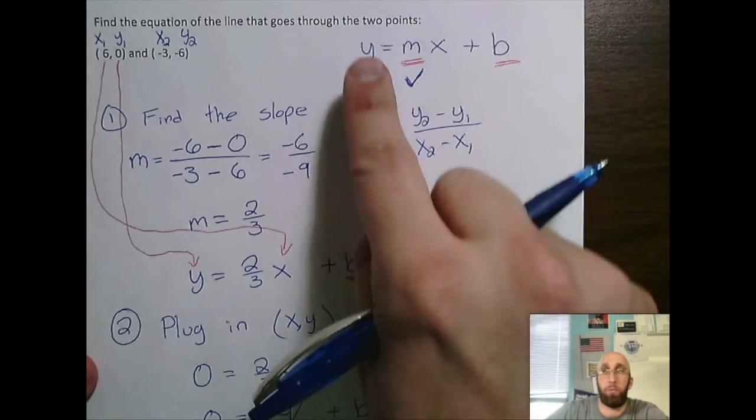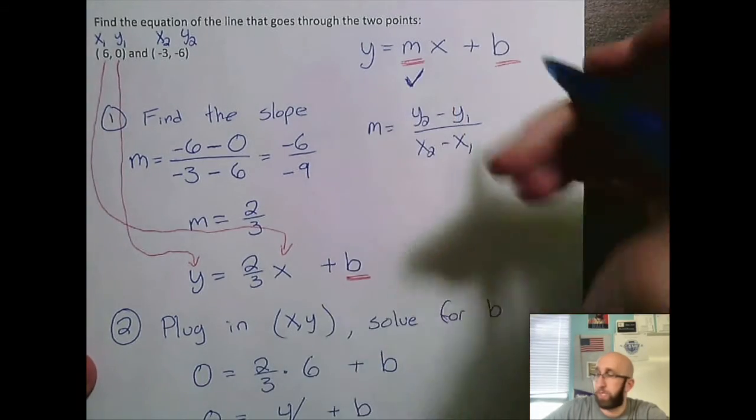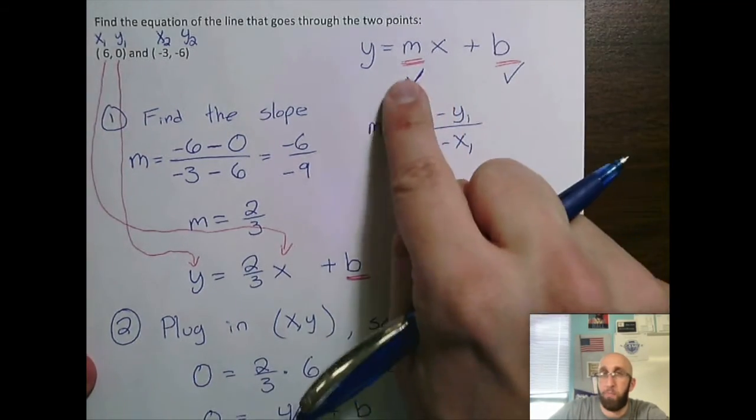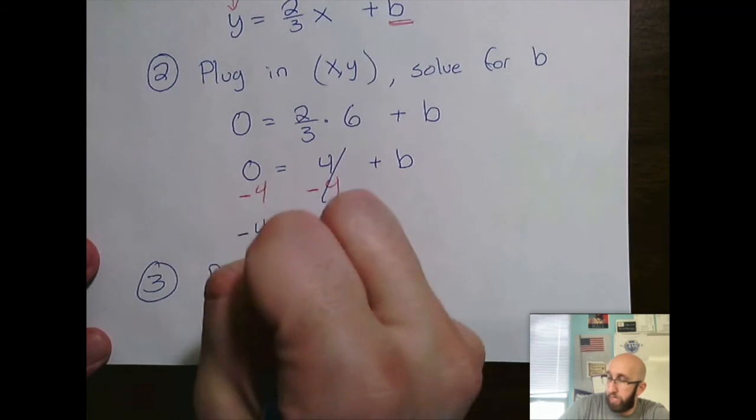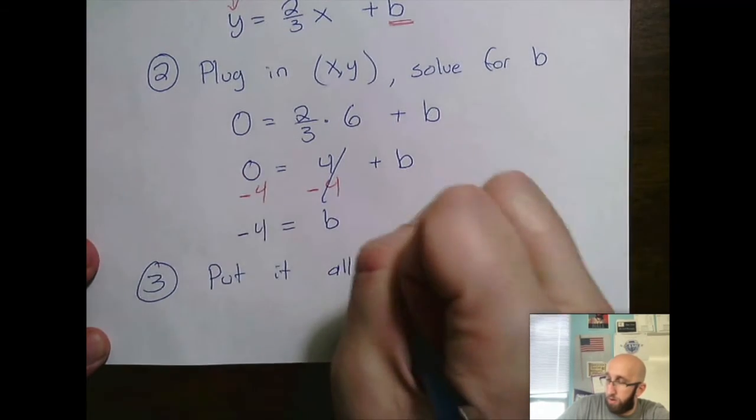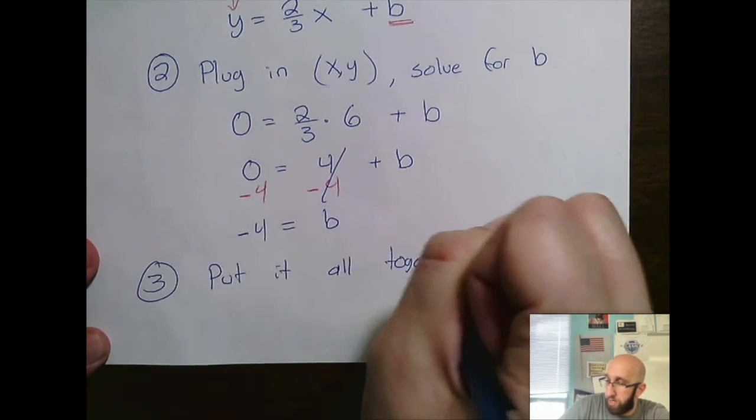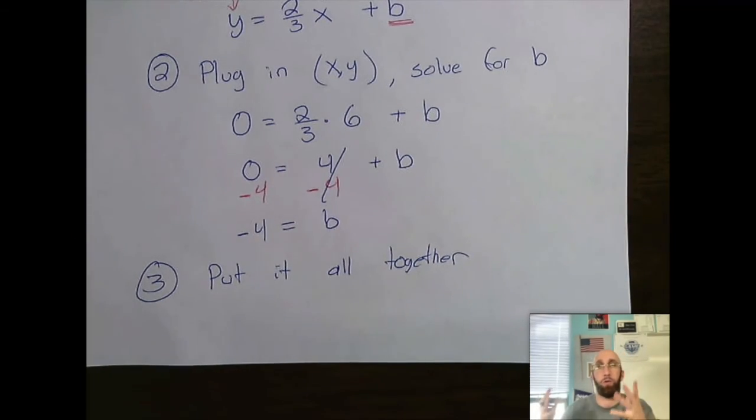Now remember, my goal was to figure out y equals mx plus b. Well, I now know my m. I now know my b. So the final thing we need to do, the third phase is put it all together. Put the whole equation together.